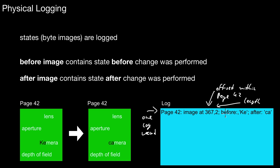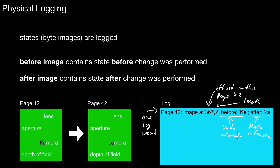This is also called the redo information, because this allows us to redo the change. If we lose the actual change done in the page due to power failure or whatever, and then look at the log record, we can replay the change. We take an old version of page 42, apply this thing at offset 367, and we are back to the current state. In contrast, the before image is called the undo information.